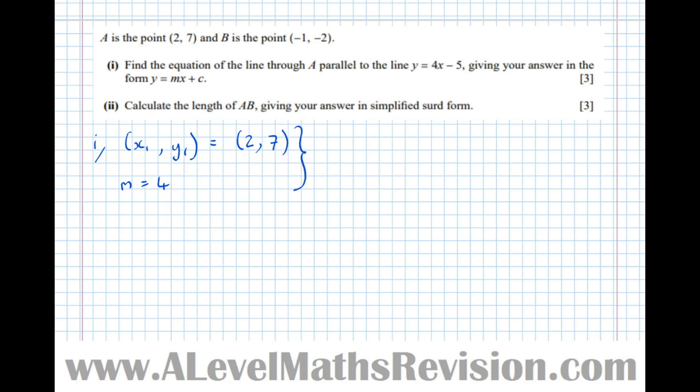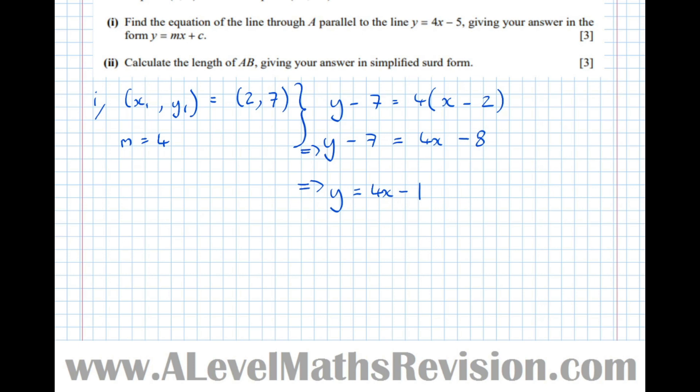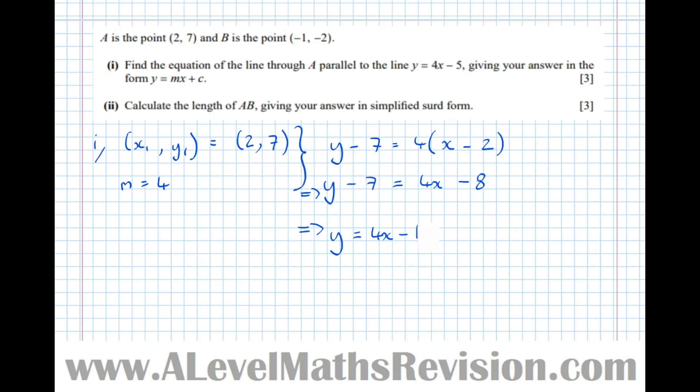Using the equation y minus y1 equals m times x minus x1, multiplying out, y minus 7 equals 4x minus 8, which implies y equals 4x minus 1. There's our equation in the form y equals mx plus c.